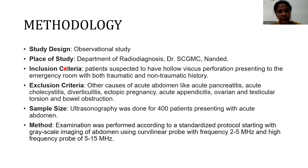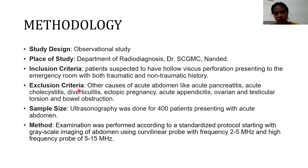Inclusion criteria: patients suspected to have hollow viscous perforation presenting to the emergency room with both traumatic and non-traumatic history. Exclusion criteria: all other causes of acute abdomen like acute pancreatitis, acute cholecystitis, diverticulitis, ectopic pregnancy, torsion of ovaries and testes, bowel obstructions, and acute appendicitis were ruled out. Sample size was 400, and we used a standard protocol for grayscale imaging of the abdomen using a curvilinear probe and high-frequency probe.